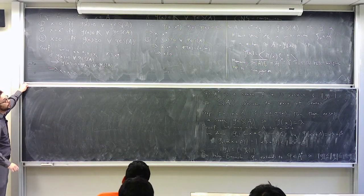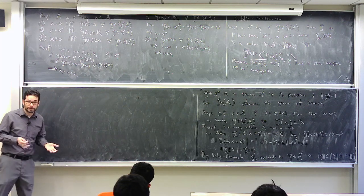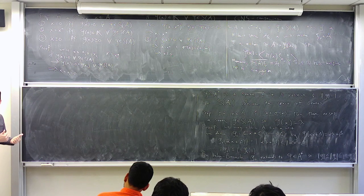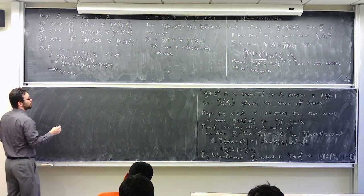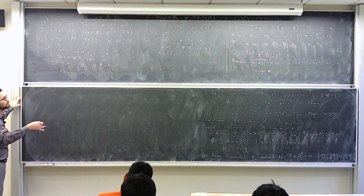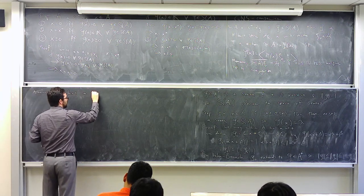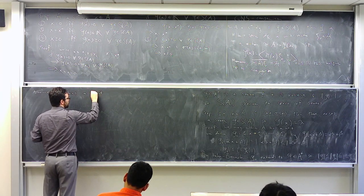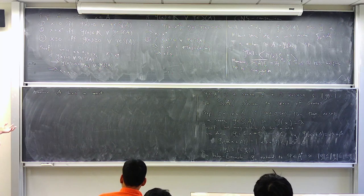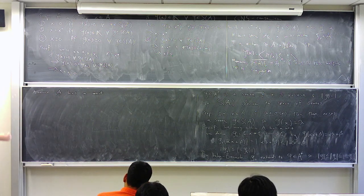Let's construct the GNS representation. Assume A is unital (otherwise extend φ to the unitization and restrict the representation back). The key observation is that φ gives a non-negative definite inner product on A via ⟨x, y⟩ = φ(y*x). This is always a good sign, as it suggests a Hilbert space is hiding here.